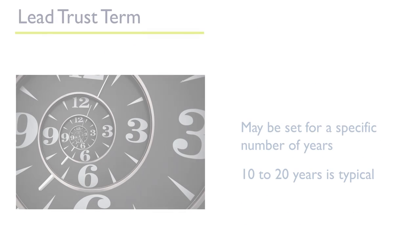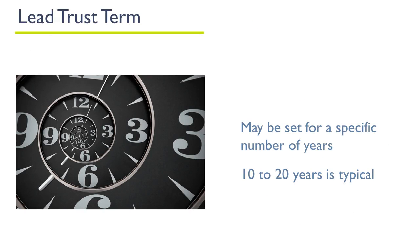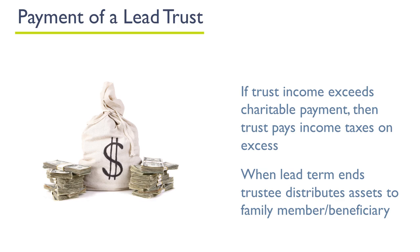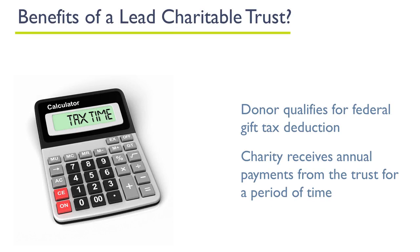The lead trust term may be for a specific number of years — 10 to 20 years is common. Payments are made out of the trust income or trust principal if the trust income is not adequate. If the trust income exceeds the charitable payment in a given year, the trust pays income tax on the excess. When the lead trust term ends, the trust distributes all of its accumulated assets to the family member or other beneficiary named by the donor. Again, this is a wealth transfer strategy.